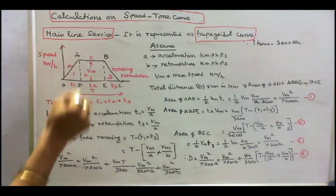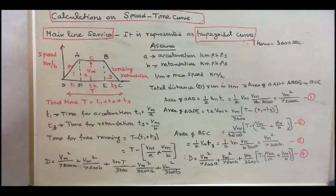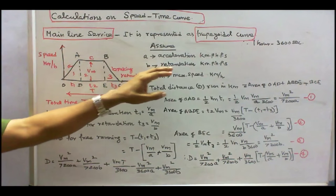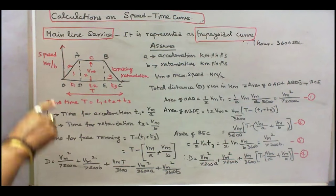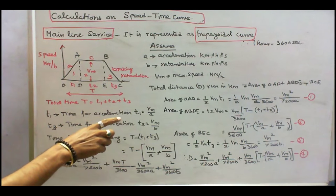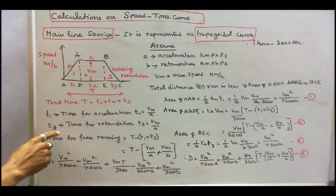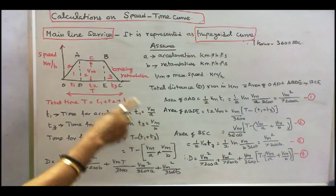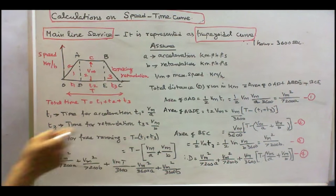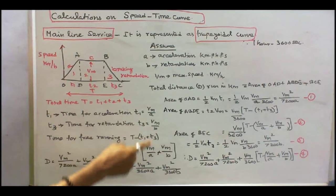Calculation on the speed-time curve. The speed-time curve of a mainline service is represented as a trapezoidal curve. Let A be acceleration in km/h/s and B be retardation in km/h/s. T1 is time for acceleration, equal to Vm/A, where Vm is maximum speed in km/h. T3 is time for retardation, equal to Vm/B. Time for free running equals total time T minus (T1 + T3), which is T minus (Vm/A + Vm/B).